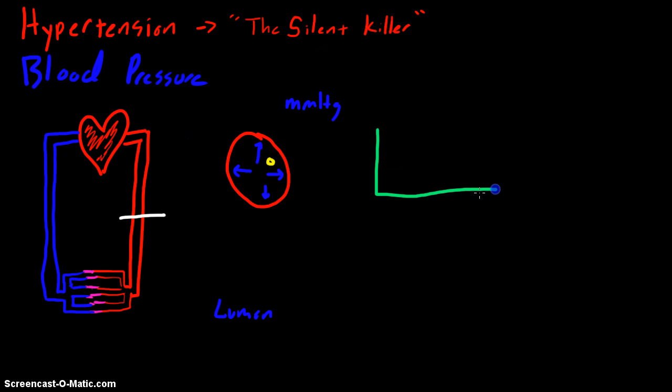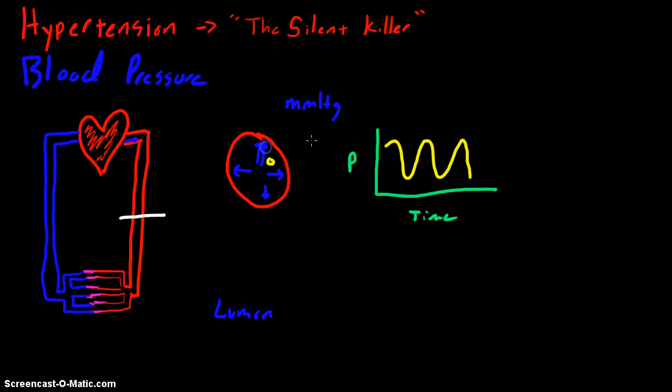Here's time, and here's pressure. The pressure inside the lumen would be going up and down. When the heart beats and blood rushes into the arterial system, the pressure in the lumen increases. That gives us this high point, which is called the systolic blood pressure.